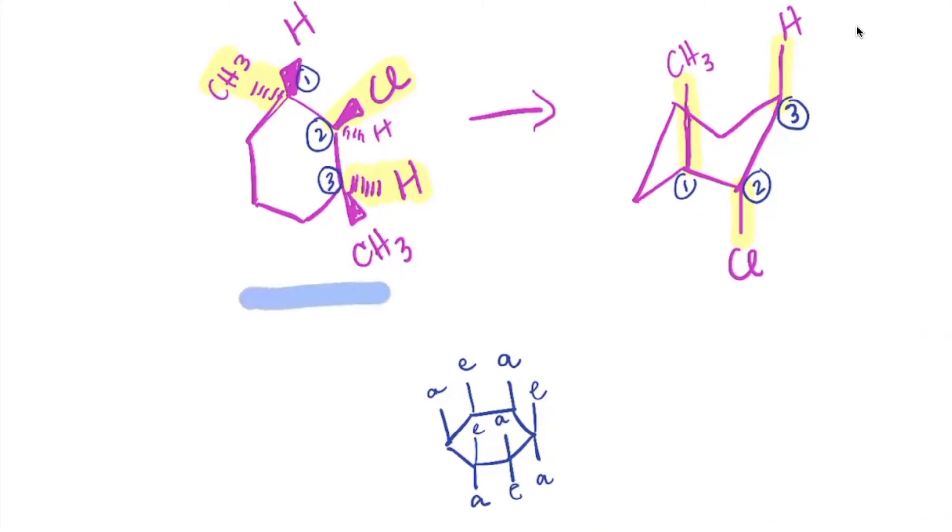When we have a flat ring with chlorine coming out toward us, to be 1,2-diaxial it must be trans. On carbon one, the methyl group, chlorine on carbon two, and hydrogen on carbon three will all be either axial or equatorial depending on the ring flip. In the chair conformation, we see the methyl on carbon one, chlorine on carbon two, and hydrogen on carbon three.